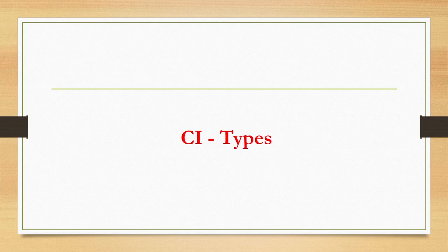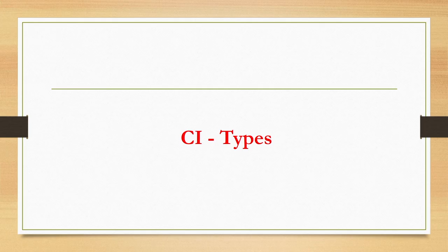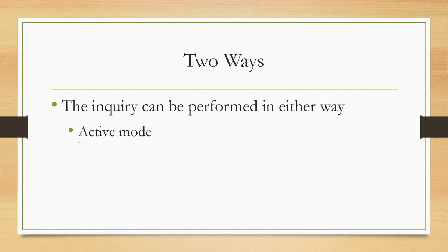So, to summarize, contextual inquiry is an observation-based approach to gather end user requirements where we observe users in their natural work setting. Observation can be supported by unstructured interviews. The observers can ask queries to users to get more clarification on certain behaviors or activities observed during the contextual inquiry process. Contextual inquiry can be performed in different ways — broadly there are two modes: the active mode and the passive mode.